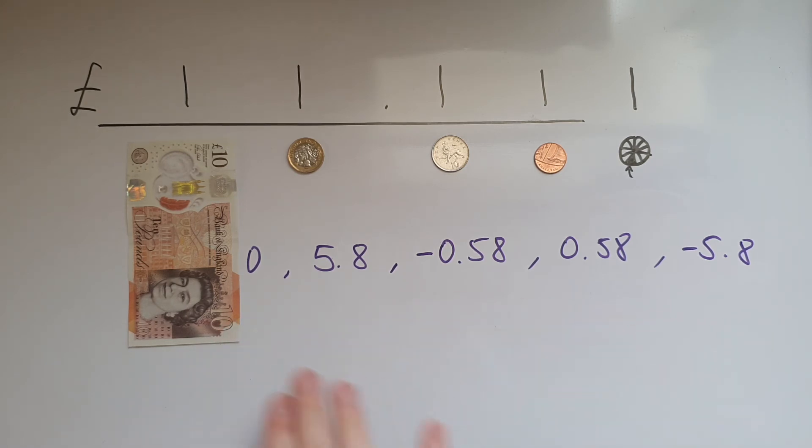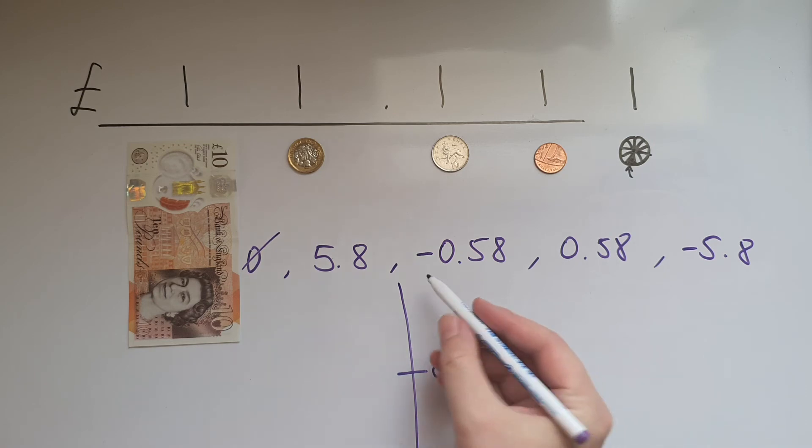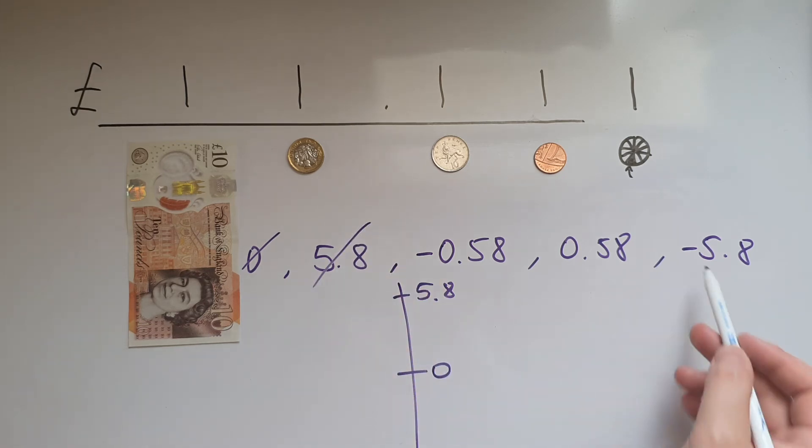Now I've got five numbers: 0, 5.8, negative 0.58, 0.58, negative 5.8. On a number line, I'm going to show you that we'd place 0 here. 5.8 probably around there, so it's higher than 5 but less than 6. Negative 5.8 would be on completely the other side of the number line, something like being overdrafted by £5.80.